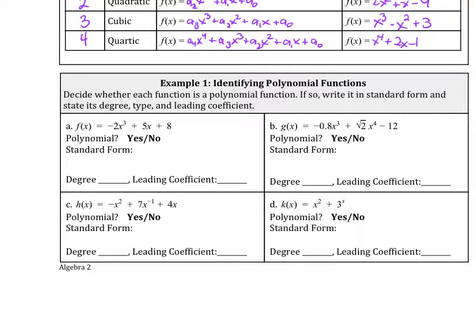So we have the example f of x equals negative 2x cubed plus 5x plus 8. And so we decide is this a polynomial? Yes, it is. And the exponents are in descending order. This is cubed and then to the first and 8. So we don't need to rewrite it.